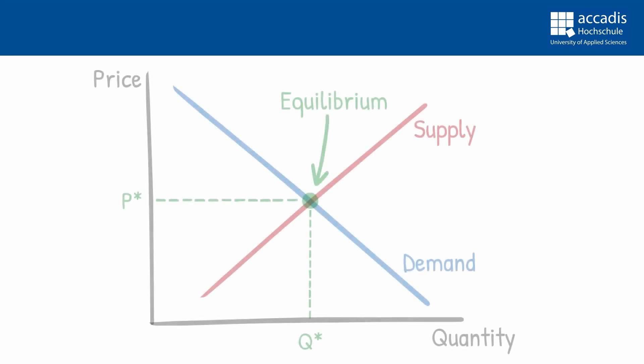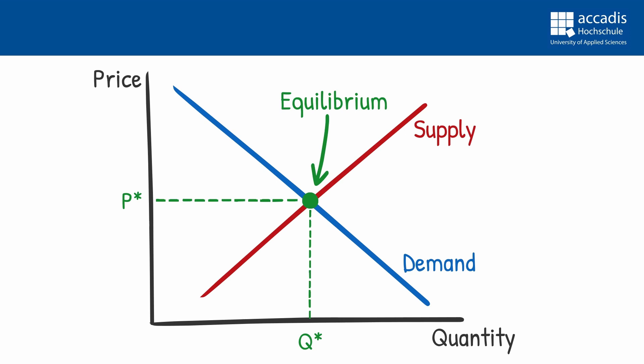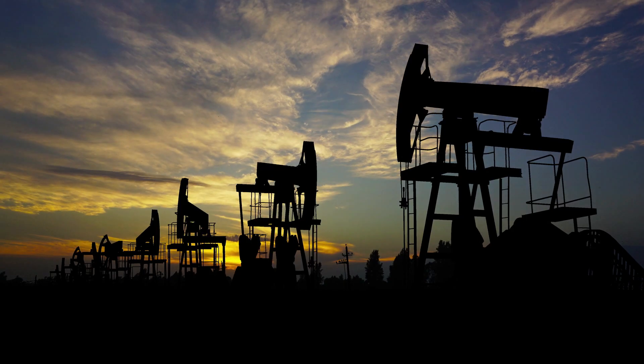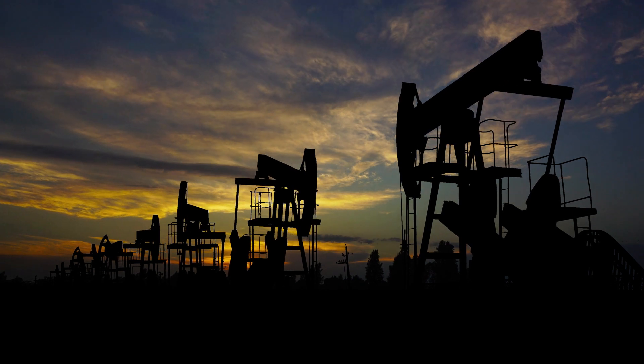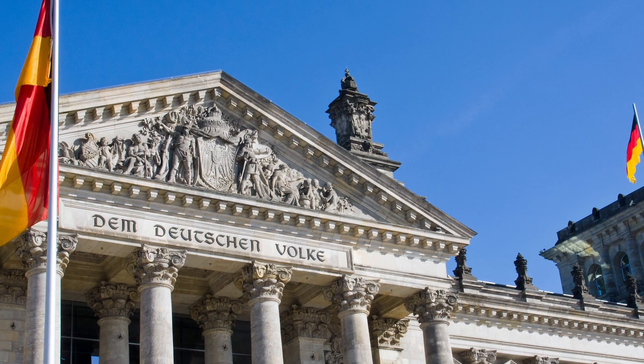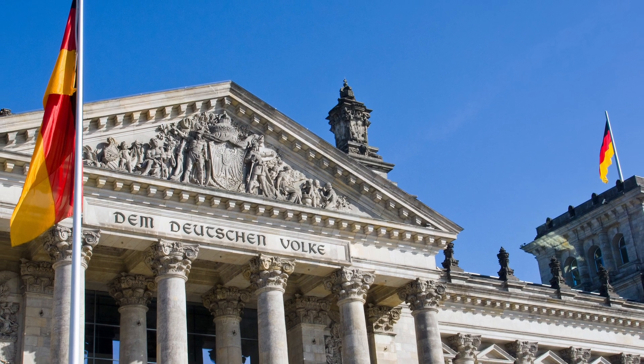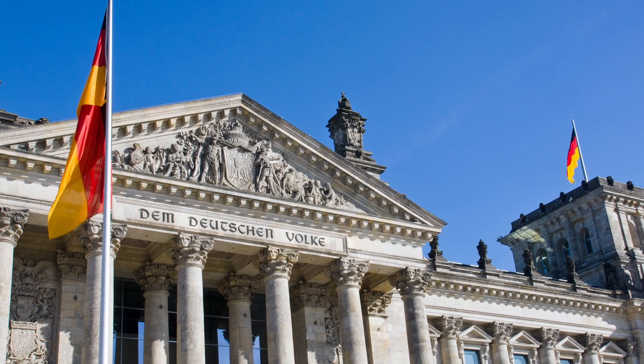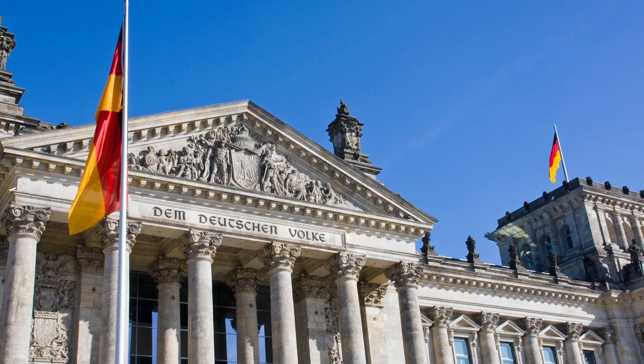So today we will examine demand and supply of a market in more detail. We'll find out how we can model these two sides of the markets within the price-quantity diagram and we will understand why and when demand and supply change. And then we will apply this model to all sorts of economic questions, for example to monopolies and market power or to government intervention when we ask ourselves what will happen if the state intervenes into the market, for example with taxes or price controls.